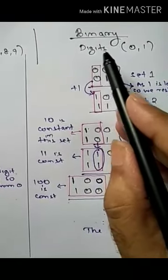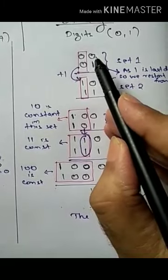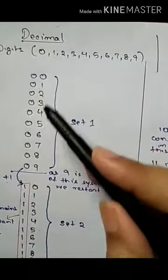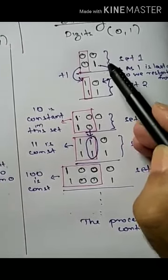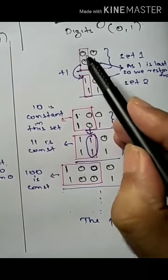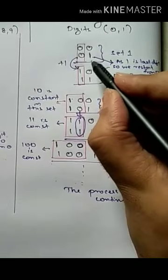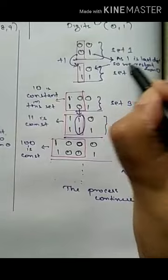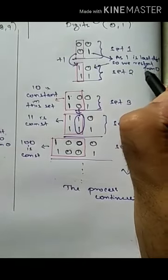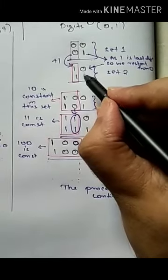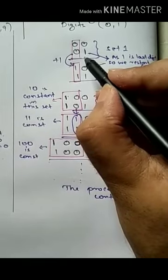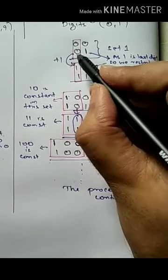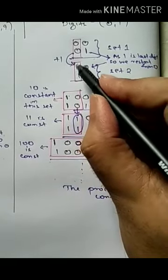In the binary system, there are only two digits: 0 and 1. Just as we wrote 0 to 9 in decimal, here we write 0 to 1 — this is one set. Since 1 is the last digit of the binary system, after 1 we restart from 0. In the next set, 0 and 1 are written again, but the just-left position changes from 0 to 1, and that 1 remains constant throughout this set.